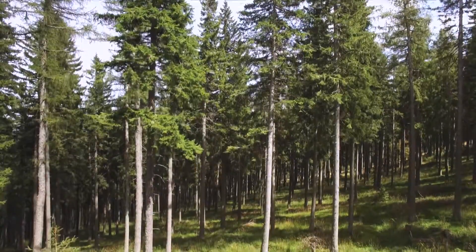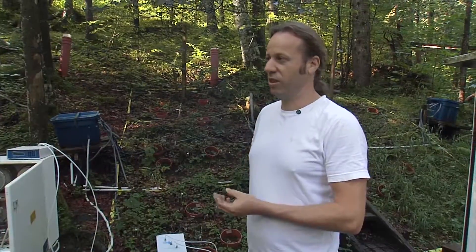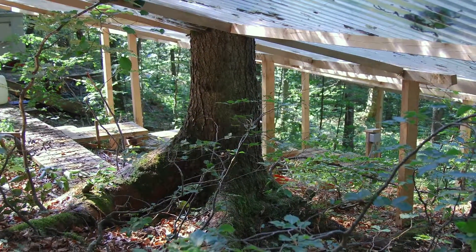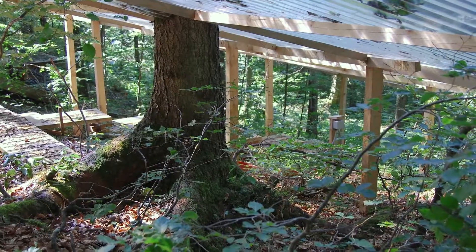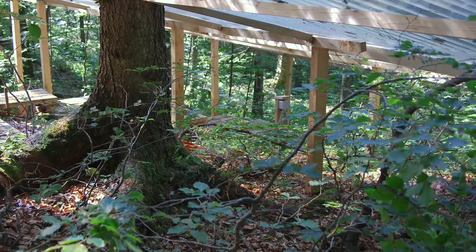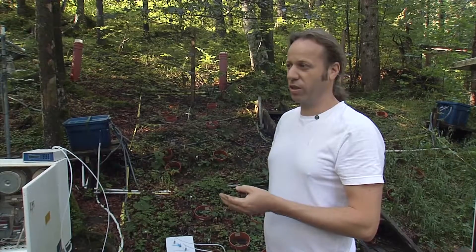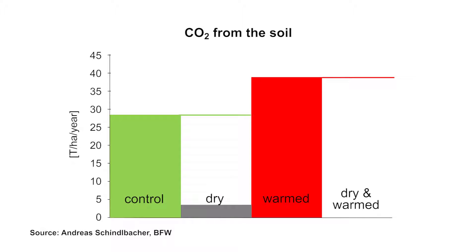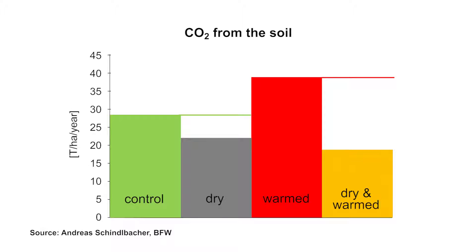It becomes more complex when dryness appears, because it is possible that the soil reacts differently from the trees. In this experiment, roofs were put up and warming and dryness were simulated at the same time. It was discovered that when substantial dryness is present, the drought effects are even stronger than those from increasing warming. Taking into consideration possible long drought periods, it becomes clear that increased temperatures could play a lesser role, as drought decreases the CO2 release from soil, especially in the warmed areas.